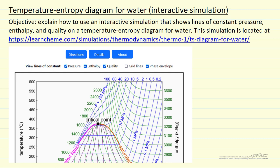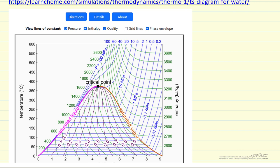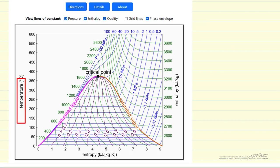I'm going to describe how to use an interactive simulation that shows a temperature-entropy diagram for water. The simulation is located at this link, and I'm showing a snapshot. We're plotting temperature on the y-axis and entropy, in kilojoules per kilogram Kelvin, on the x-axis.